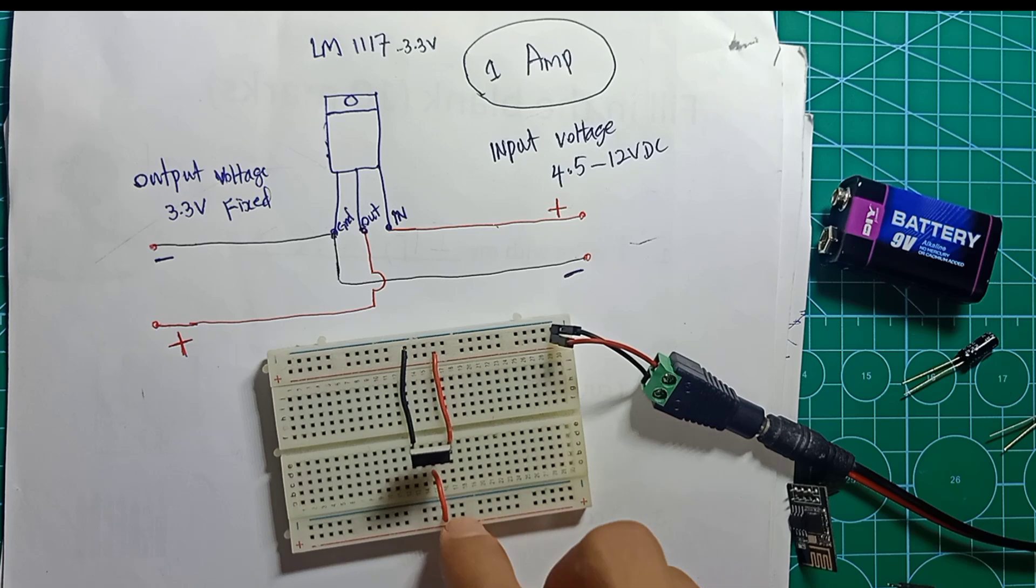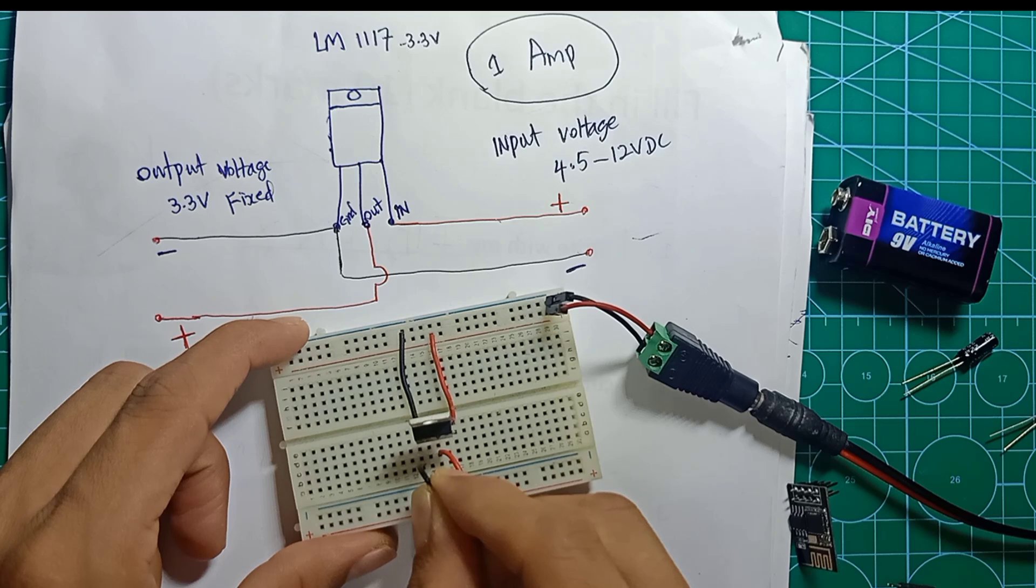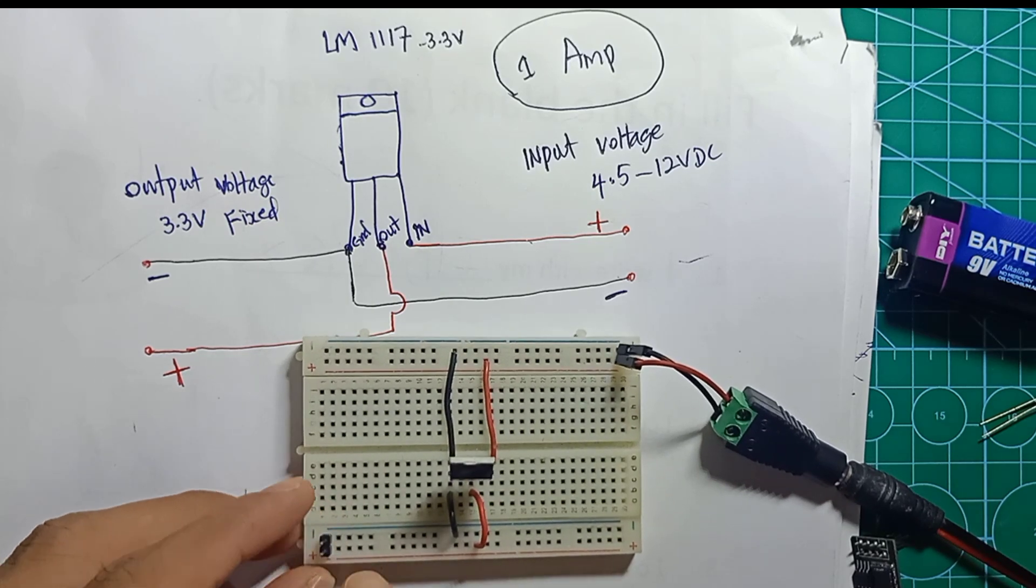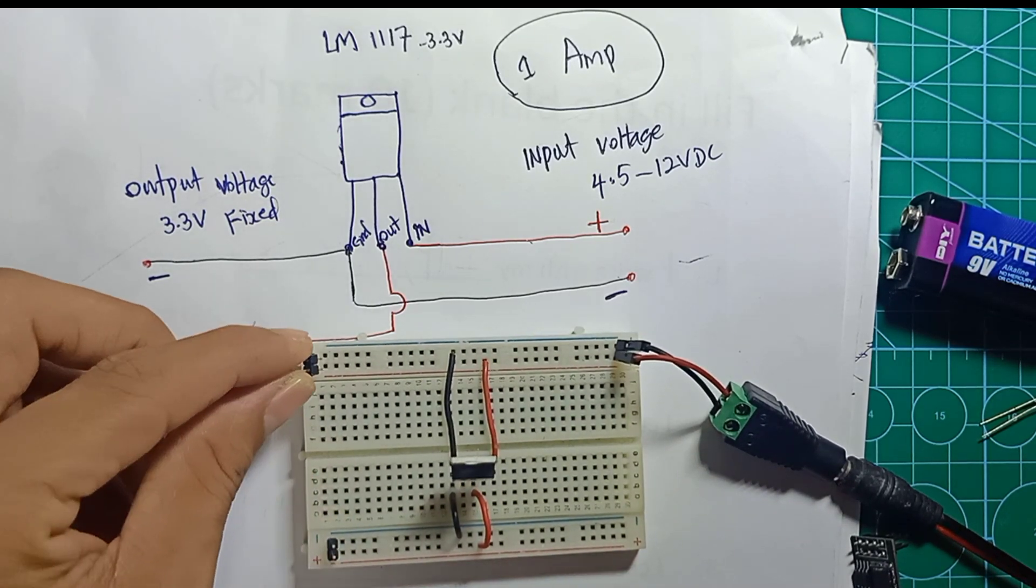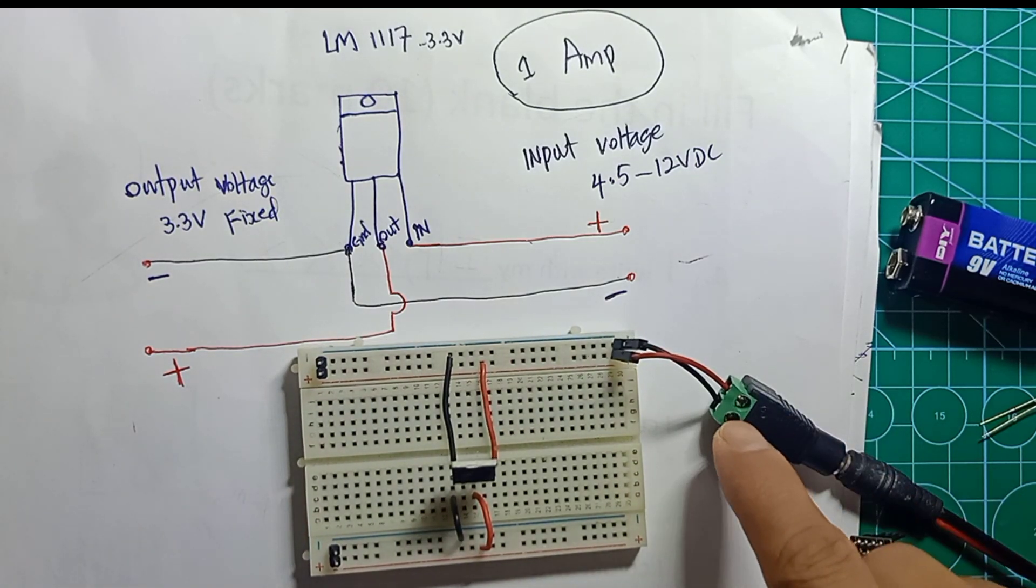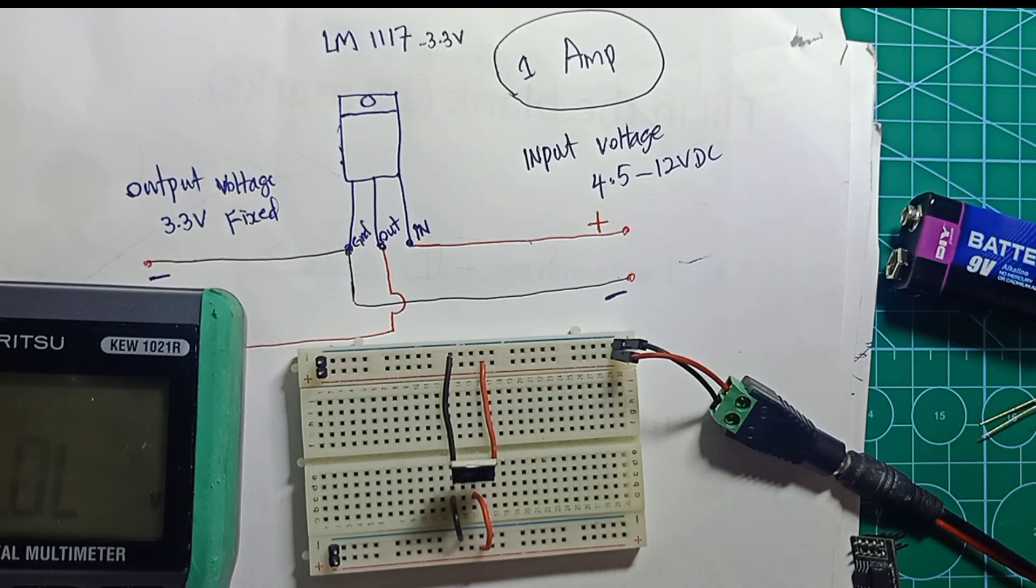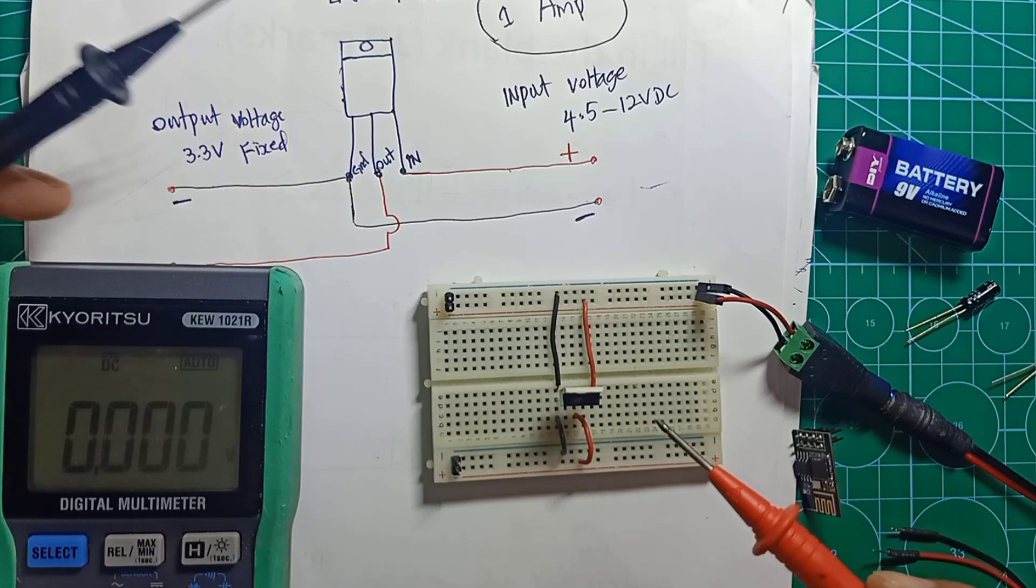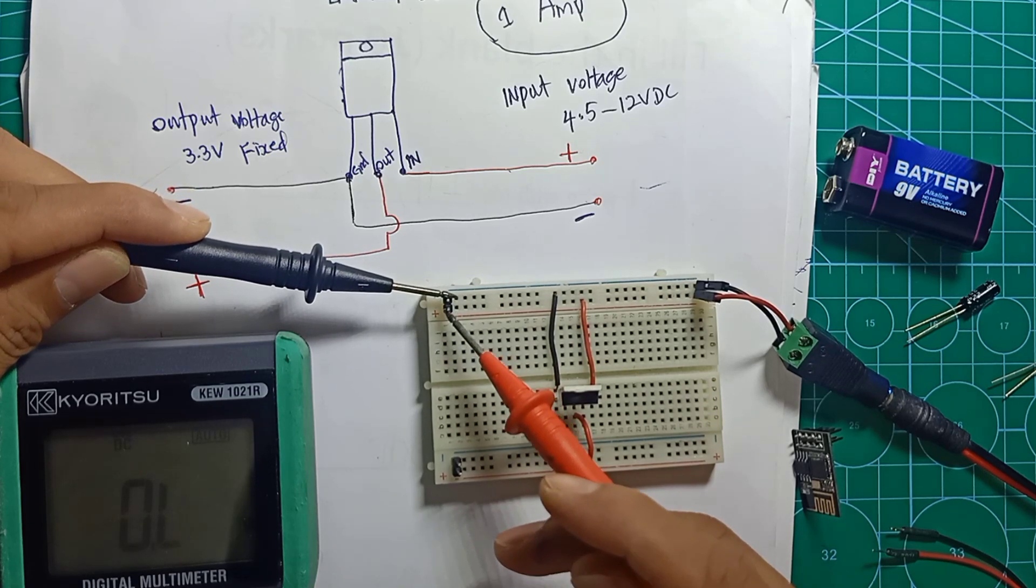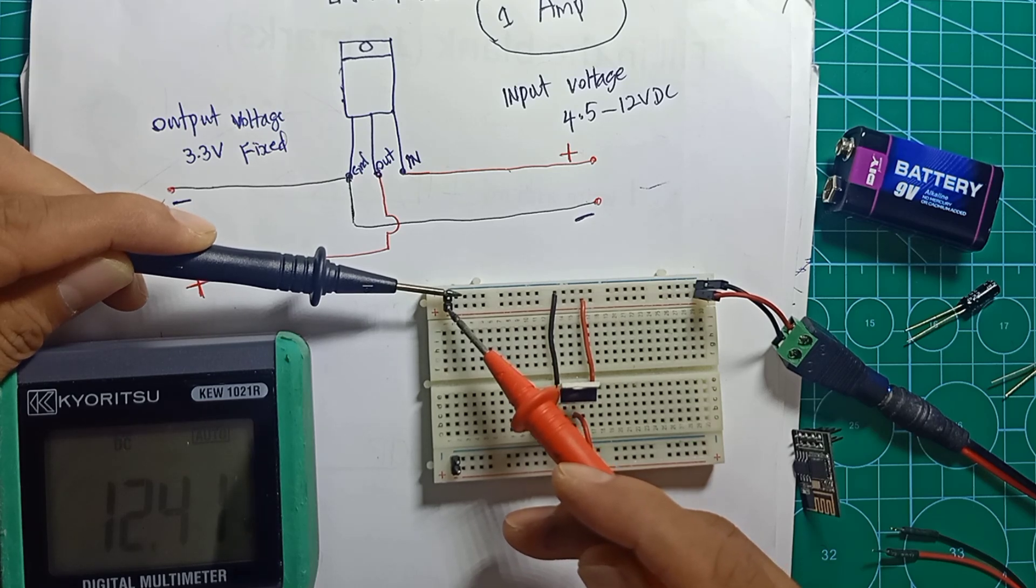This side of the breadboard positive is the output and this pin will be output negative. I'm going to place positive and negative jumpers so that we can test. Let me turn on my power supply and check with my multimeter. First I'm going to check the input voltage. This line is the input voltage - this is negative and this is positive. Here we have 12 volts input.